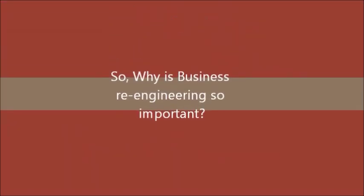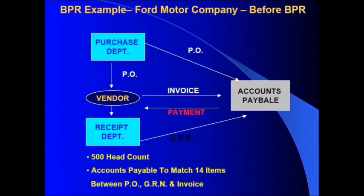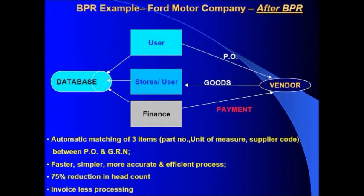So why is business re-engineering so important? A great example of Business Process Re-Engineering is one that was implemented by Ford. Before the improvement of the accounting cycle, the department had to match up 14 items in order to verify a transaction. No database was used and the process was slow and inefficient. After the implementation of BPR, Ford was able to automatically match only three items to verify a transaction. As a result, the headcount was reduced by 75%, the overall processing efficiency was increased, and a database was implemented to increase flexibility and security.